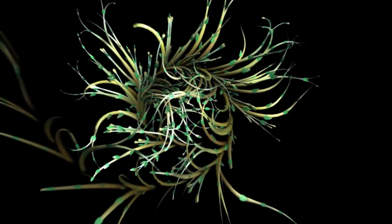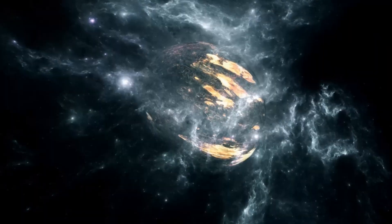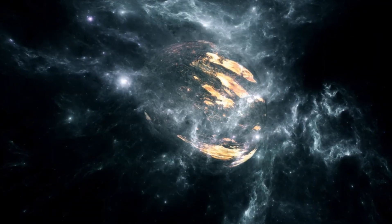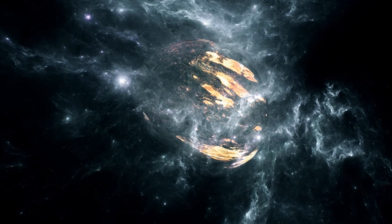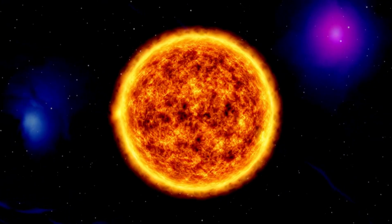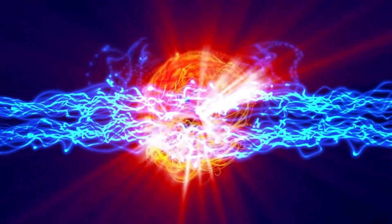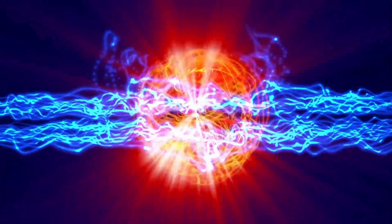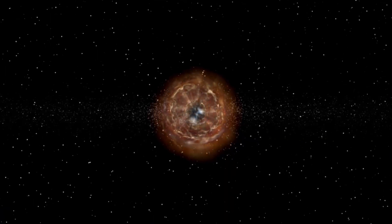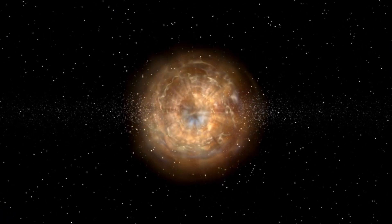The shock wave from the explosion will travel outward, dispersing heavy elements like iron, gold, and uranium into the surrounding interstellar medium. These elements are essential for the formation of new stars, planets, and even life. In this way, Betelgeuse's death will contribute to the ongoing cycle of cosmic creation and destruction.